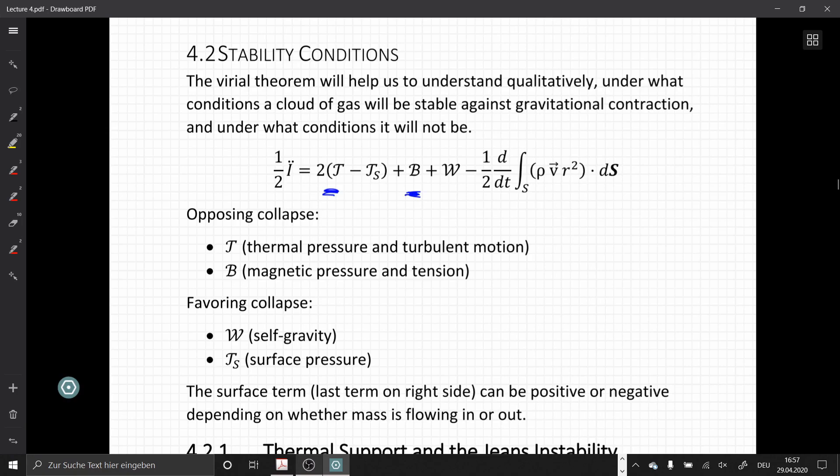We have terms that favor collapse, which is the surface pressure term that creates an inward force, and the self-gravity W that pulls our system toward the center of mass.